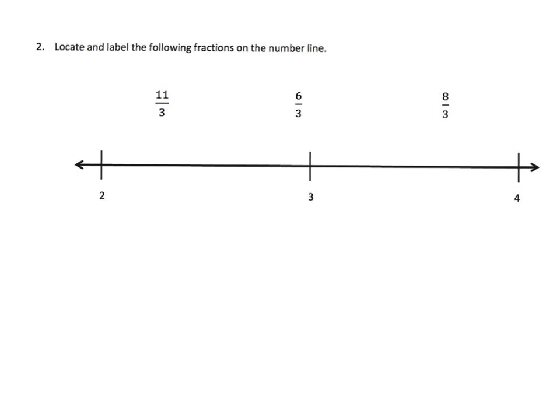So here we are told to locate and label the following fractions on the number line. The first thing we want to notice is that we're looking at 2, 3, and 4. So the interval from here to here is one whole, and then the interval from 3 to 4 is another whole. And because all of our fractions have 3 as the denominator, that means our whole number is always going to be cut into 3.